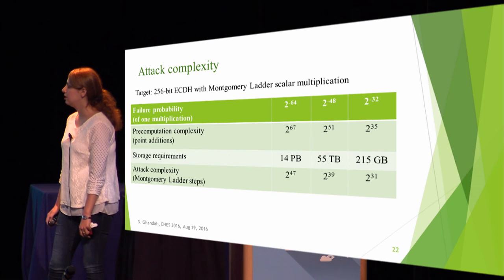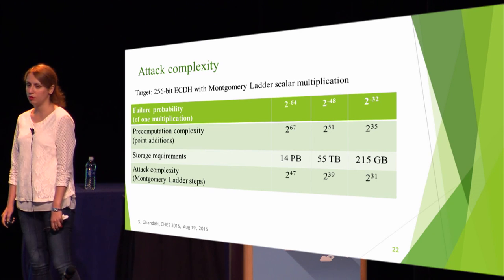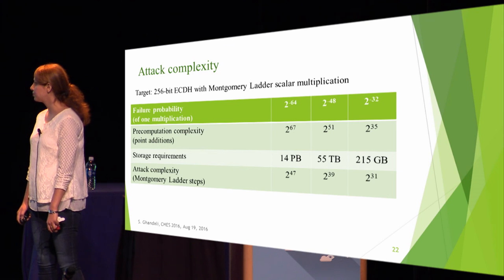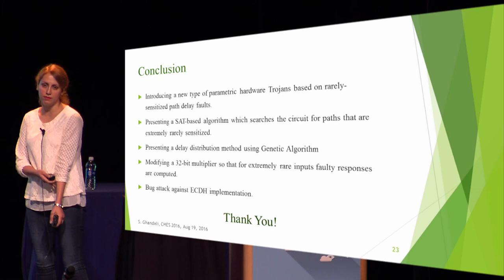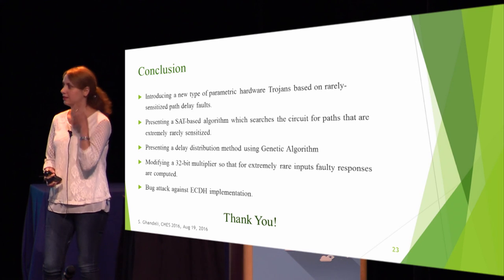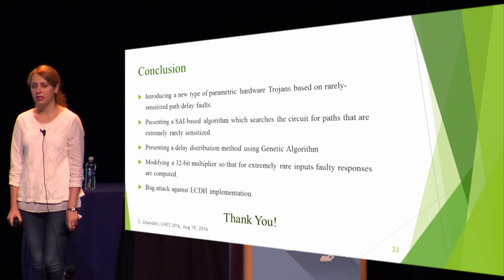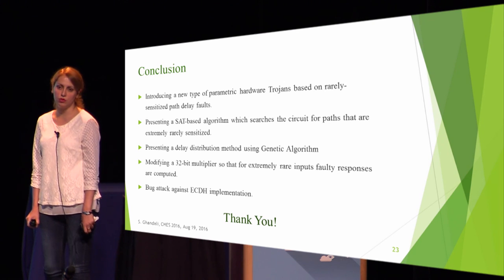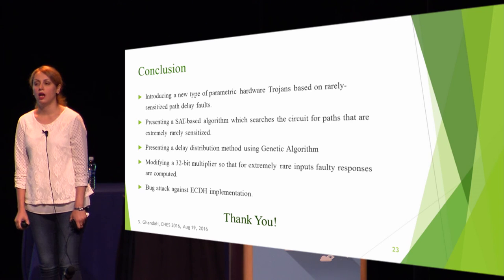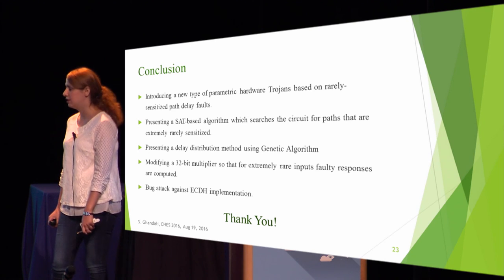This is the attack complexity. We target 256-bit ECDH with Montgomery Ladder scalar multiplication. The table reports the pre-computation complexity, storage requirement, and attack complexity for three different failure probabilities. In conclusion, we introduce a new type of parametric hardware Trojan based on a rarely-sensitized path delay fault. We present a SAT-based algorithm to search the circuit for an extremely rare path, and a delay distribution method using a genetic algorithm. We modify a 32-bit multiplier so that it produces slightly faulty output for extremely rare inputs, and we demonstrate a bug attack against an ECDH implementation. Thank you.